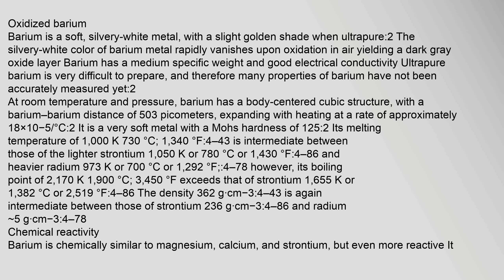Oxidized barium: barium is a soft, silvery-white metal, with a slight golden shade when ultrapure. The silvery-white color of barium metal rapidly vanishes upon oxidation in air, yielding a dark gray oxide layer. Barium has a medium specific weight and good electrical conductivity. Ultrapure barium is very difficult to prepare, and therefore many properties of barium have not been accurately measured yet.